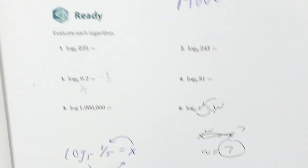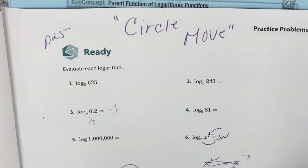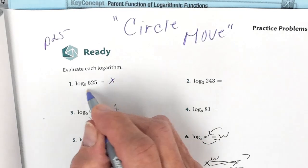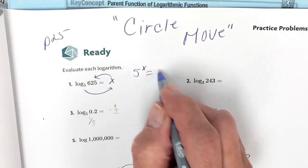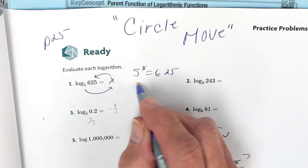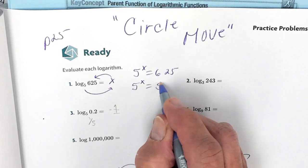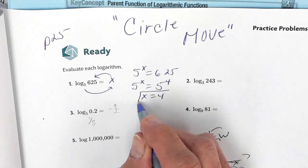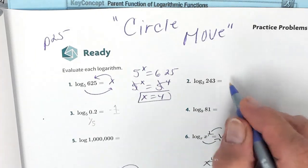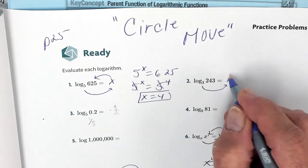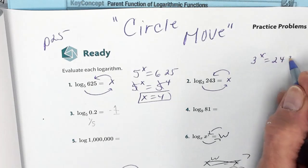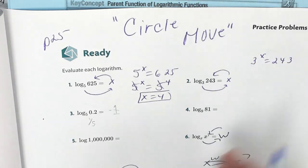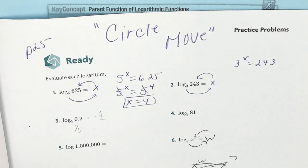Then we went to page 25 and practiced the circle move. Let's do that right now. We've got 5 to the x equals 625. Since 625 is 5 to the fourth, x equals 4. Next: 3 raised to the x equals 243 — let's try to get like bases.